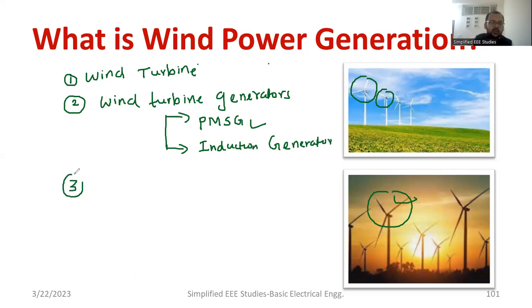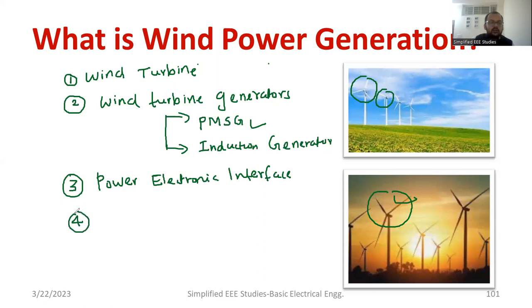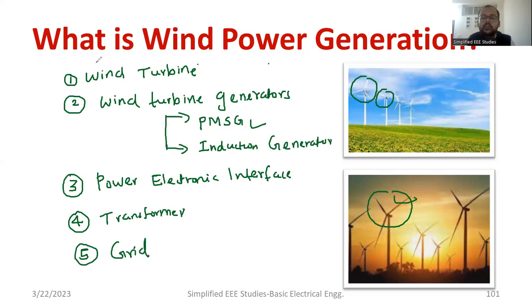The third component we require is a power electronic interface. Next, we require one transformer, and then the output of the transformer will be connected to the grid line. These are the major components of the wind energy power conversion system. Let's understand these components with the help of a simple block diagram.